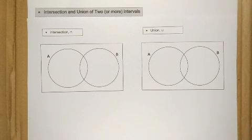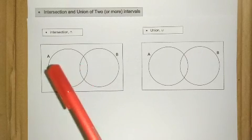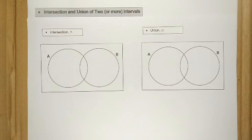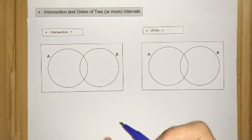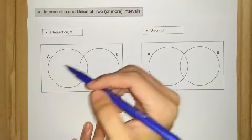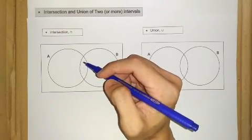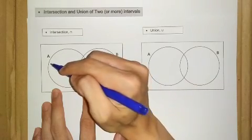Let's try this example. Let's say we have two sets, set A and set B. To find the intersection between these two sets, we shade the area of each set one by one. So let's focus on A first — we shade the entire area of set A.